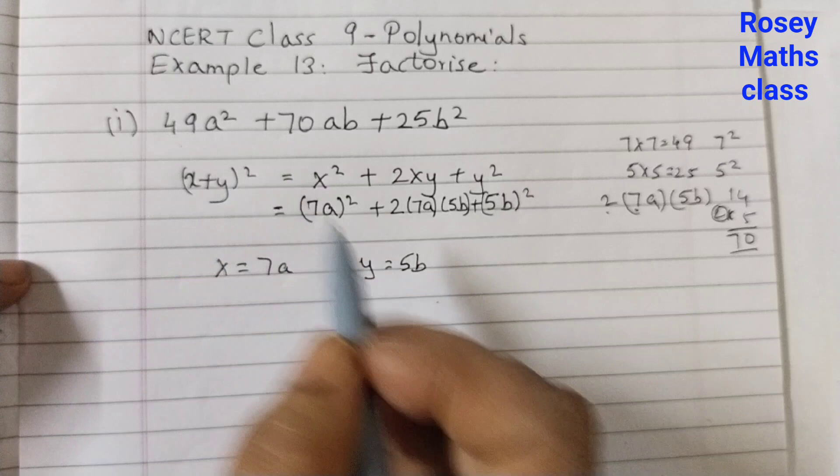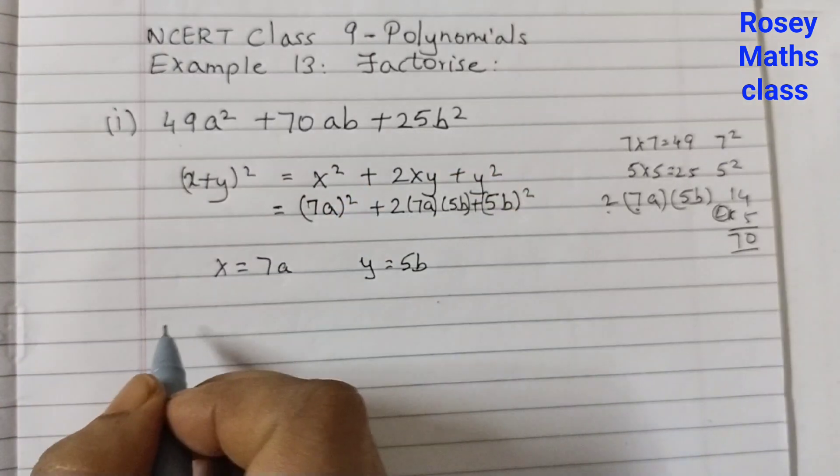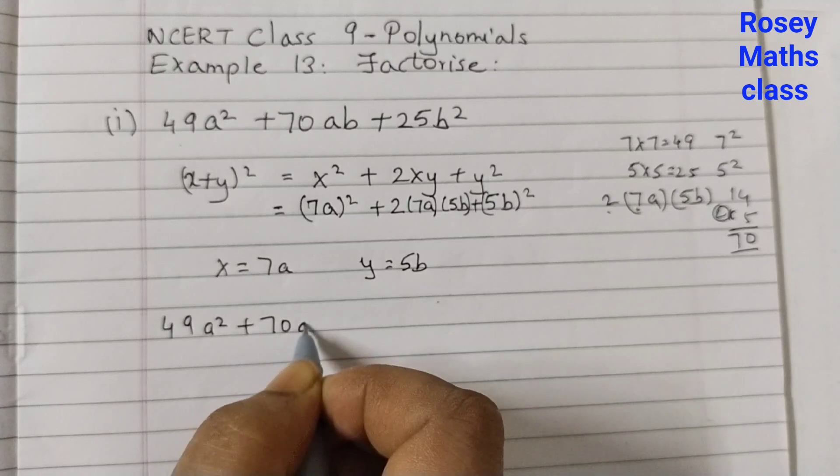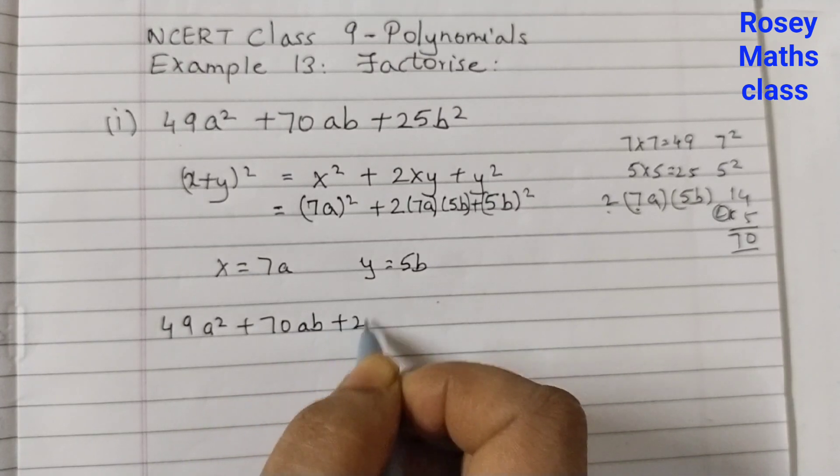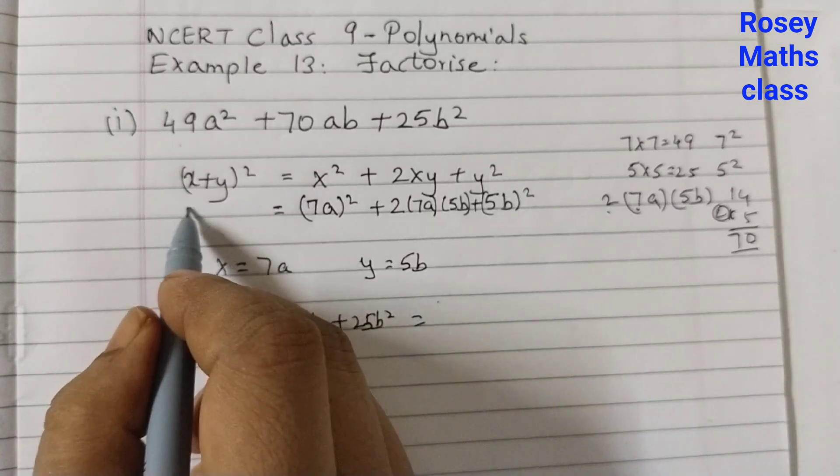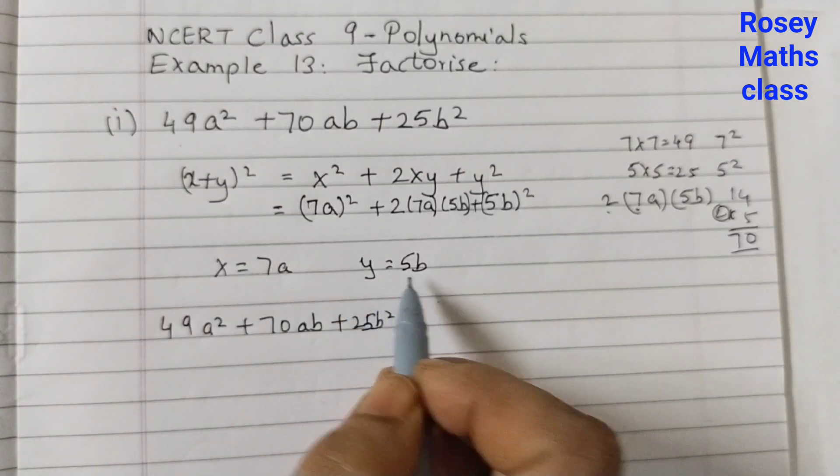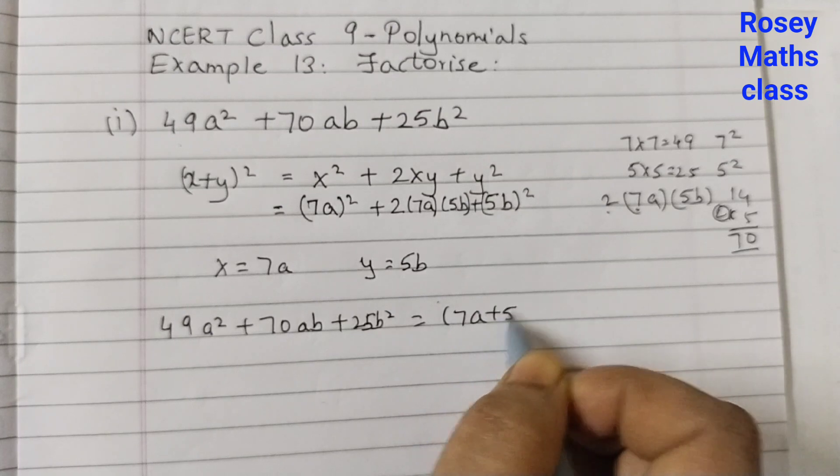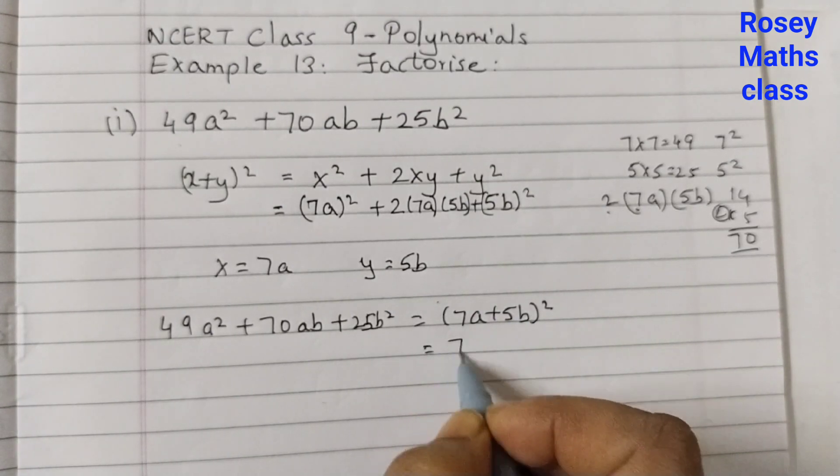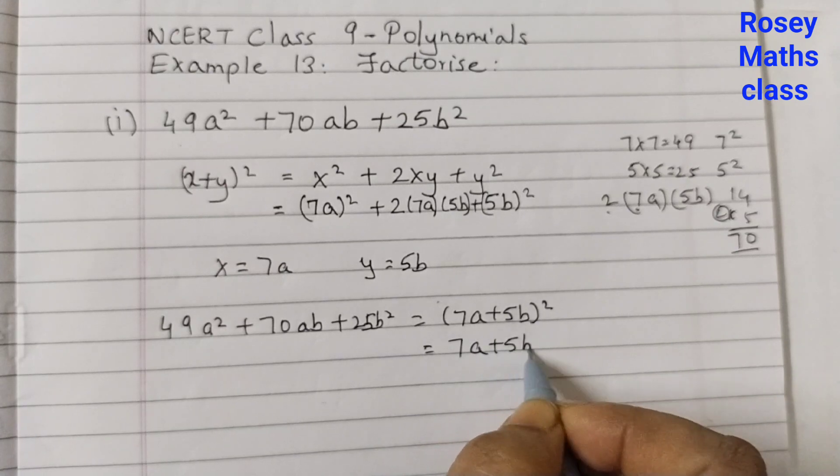x plus y squared. We will write the question first. 49a squared plus 70ab plus 25b squared is equal to x plus y, 7a plus 5b. So 7a plus 5b squared or we can write it as 7a plus 5b.